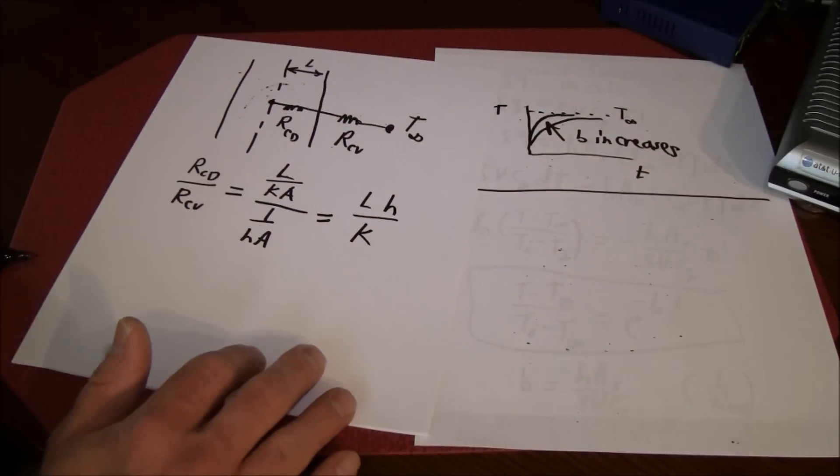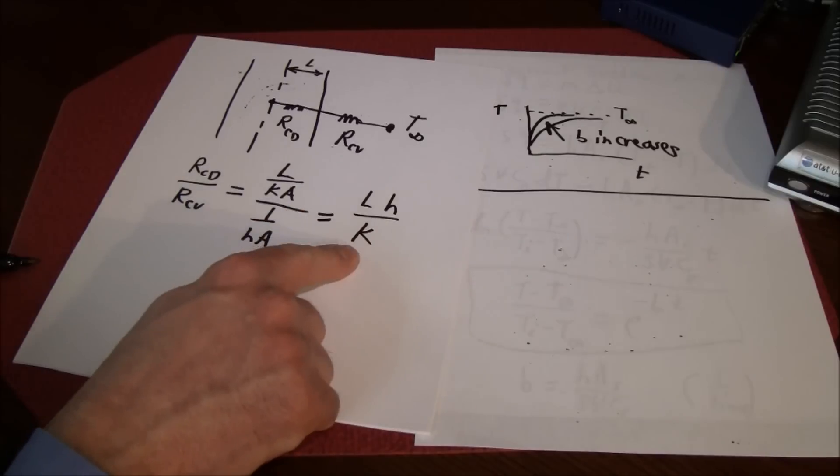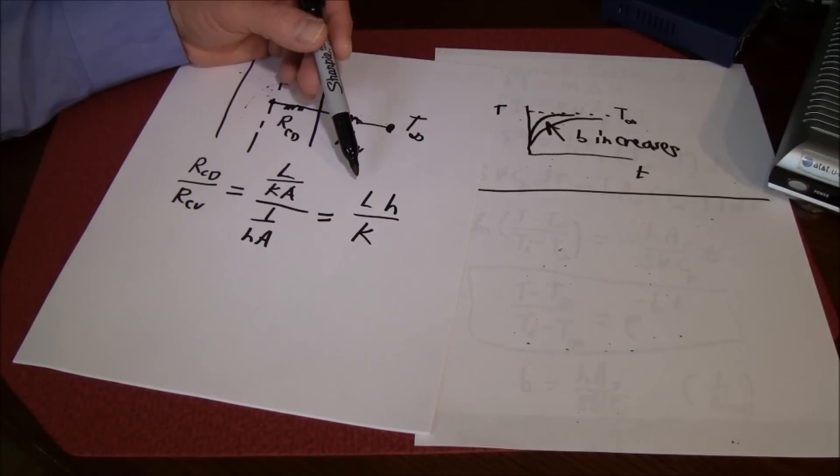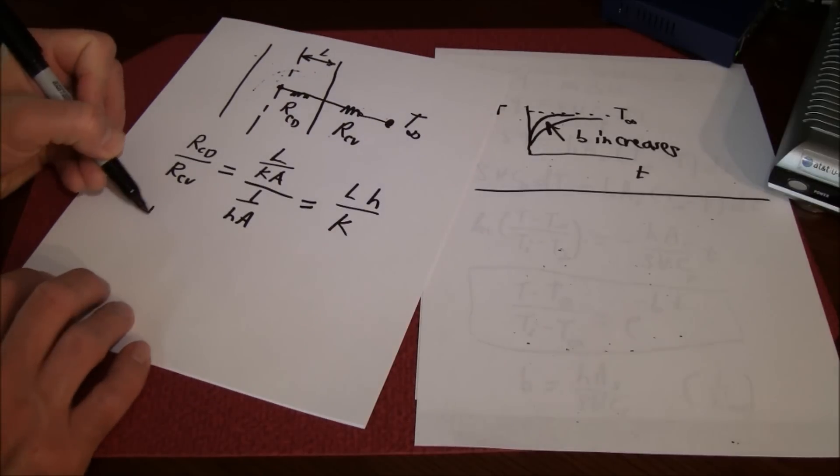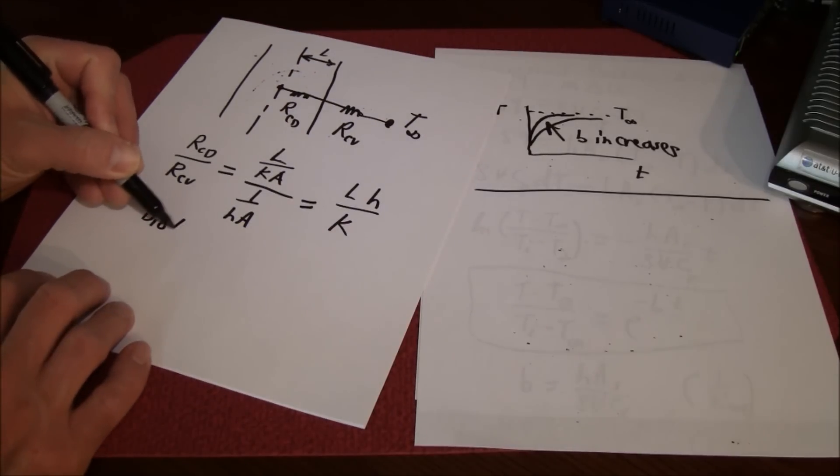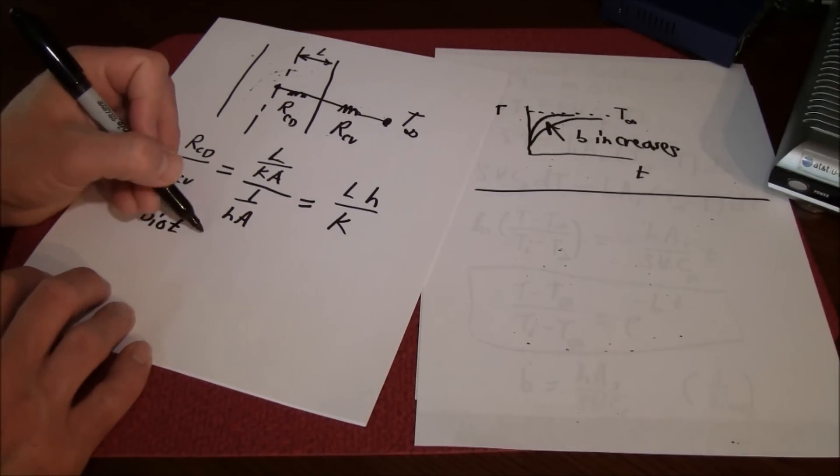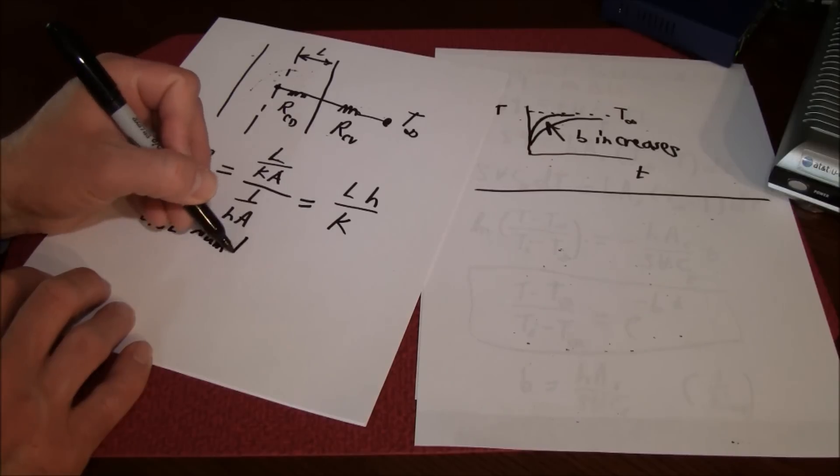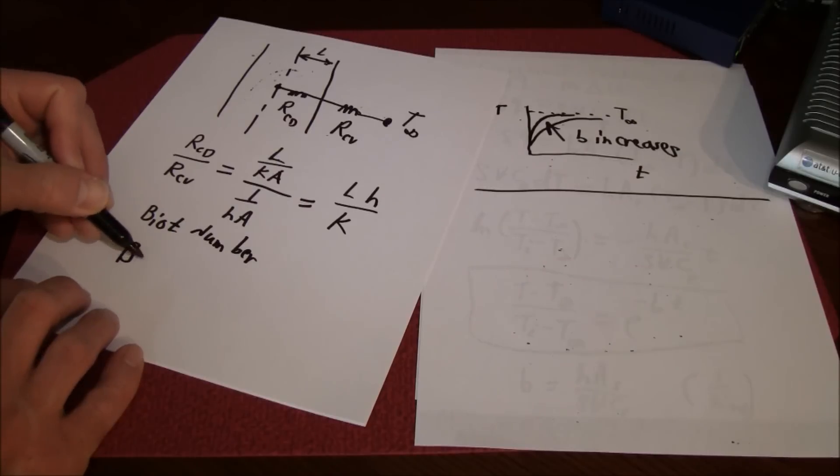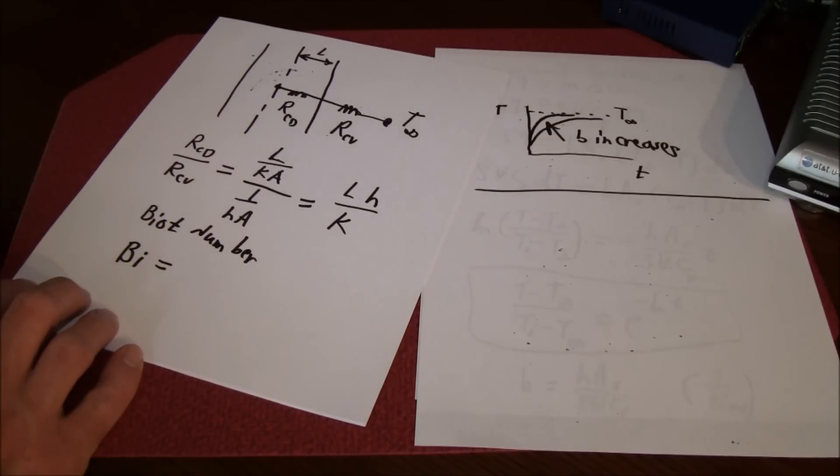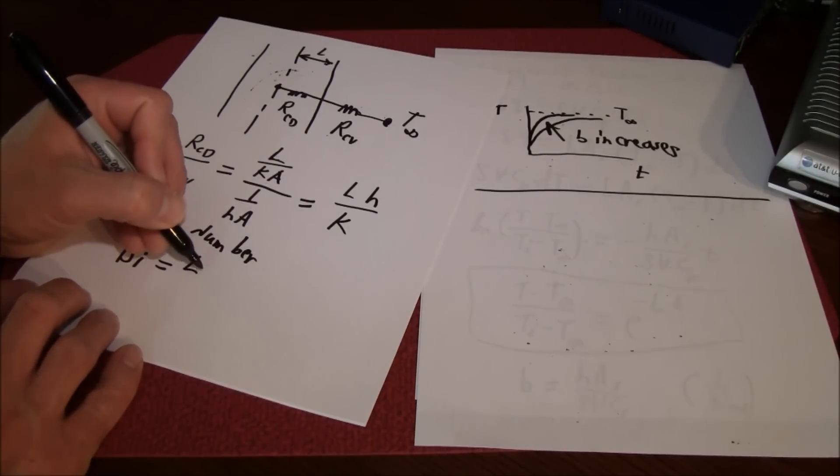This in fact is the criteria that's used to establish whether the lump system analysis is a good model for your problem, and this is called the Biot number. We just call it Bi as the symbol we use.